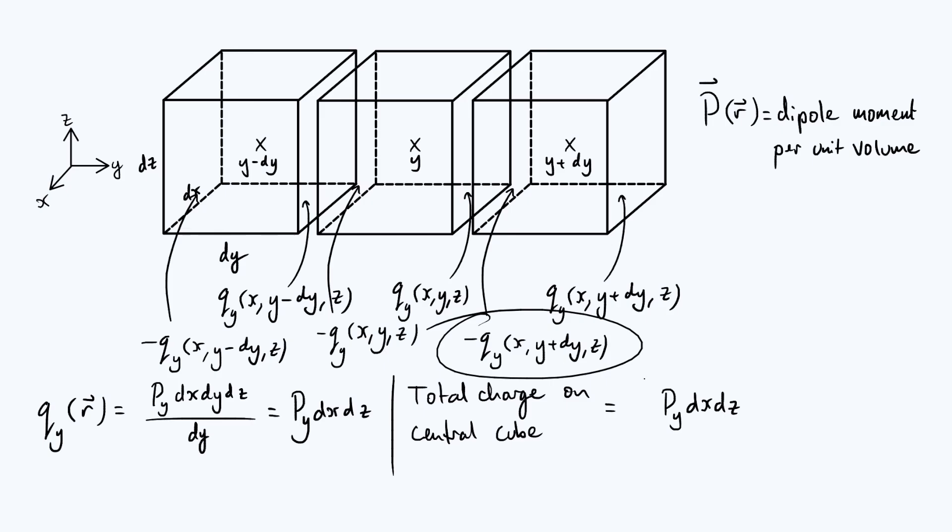So this minus q_y of y plus dy is also contributing to the charge on the middle cube. I'm going to write that down using a shorthand notation based on this P_y dx dz thing. I'm going to write it as minus P_y plus dP_y, in other words P_y plus a little increment in P_y, multiplied by dx dz.